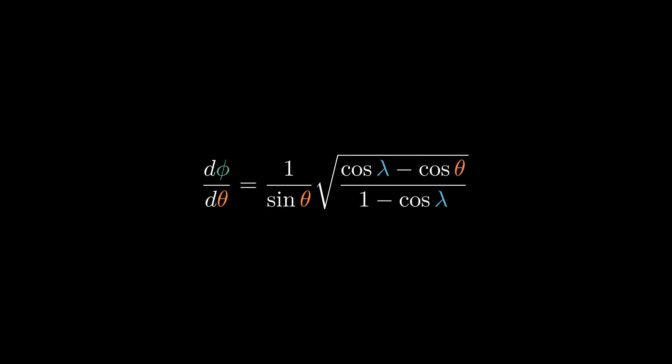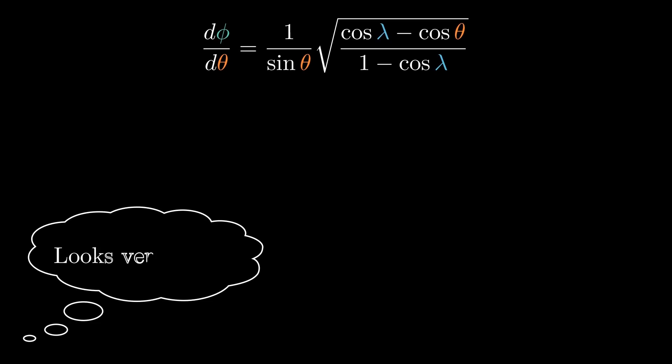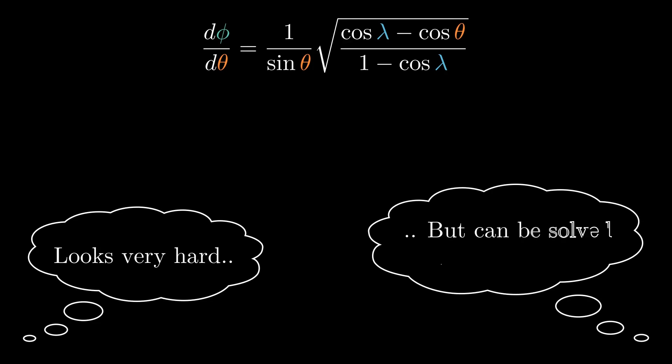Substituting all this, we get a differential equation between phi and theta of the tautochrone curve. This might look hard, but surprisingly, can be solved in closed form.